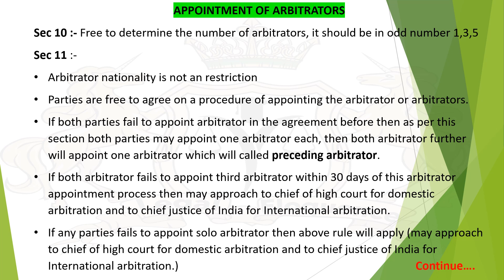Sections 14 and 15 — an arbitrator can be terminated on the following grounds: failure or impossibility to act, undue delay, person failed to perform due to physical condition or legal way, withdrawal or leaving the job, if the arbitrator has any interest in the subject matter, not capable to perform his duty, in case of his death, or if any of the parties approach the court.